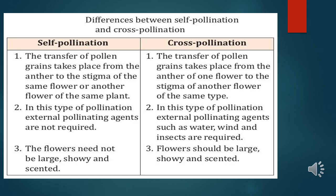Differences between self-pollination and cross-pollination: In self-pollination, transfer of pollen grains takes place from the anther to the stigma of the same flower or another flower of the same plant. In cross-pollination, it occurs between different plants of the same type. External pollinating agents are not required in self-pollination, but in cross-pollination agents like water, air, and insects are required. In self-pollination, flowers need not be large, showy, or scented; but in cross-pollination, flowers should be large, showy, and scented to attract insects.